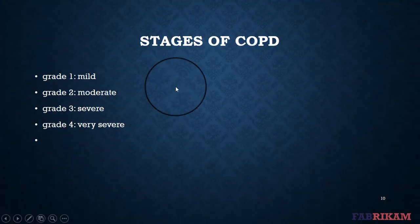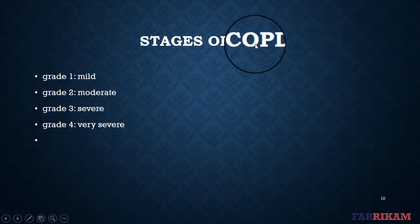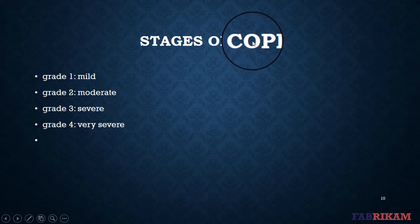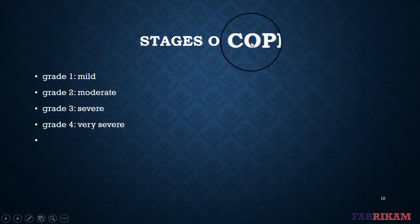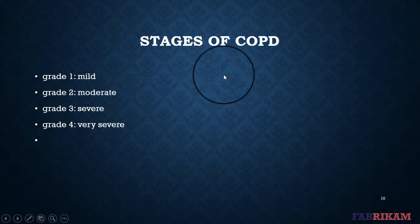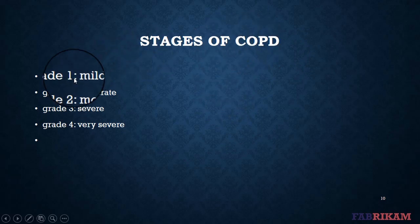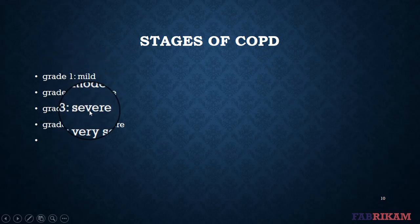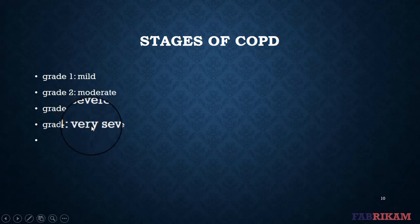One major way COPD is staged is through spirometry grading using the GOLD classification system. The GOLD classification is used for determining COPD severity and helping to form a prognosis and treatment plan. There are four GOLD grades based on spirometry testing: Grade 1 — mild, Grade 2 — moderate, Grade 3 — severe, and Grade 4 — very severe.